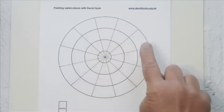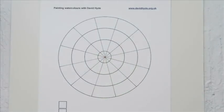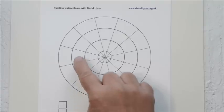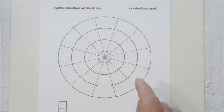Around the edge of the wheel we'll paint our primary and secondary colours. The inner area will contain mixes of all three primaries. These mixes are called tertiaries and will be our browns and greys.